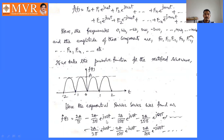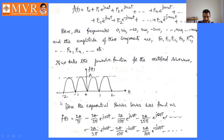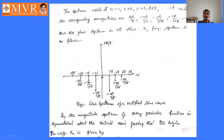The exponential Fourier series of the full wave rectifier is: f(t) = 2A/π − (2A/3π)(e^(j2πt) + e^(−j2πt)) − (2A/15π)(e^(j4πt) + e^(−j4πt)) − (2A/35π)(e^(j6πt) + e^(−j6πt)) and so on. The frequency spectrum exists at ω = 0, ±2π, ±4π, ±6π, etc., with corresponding magnitudes 2A/π (DC component), 2A/3π, 2A/15π, 2A/35π as the harmonic AC components.